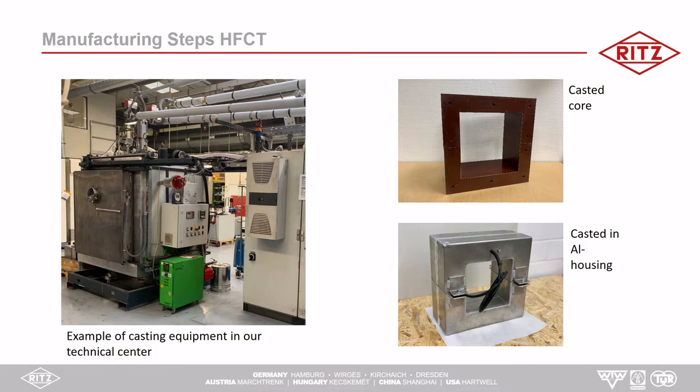The core elements need to be stacked in a split core design. To stabilize and protect them from the environment, mechanical stress, and preserve magnetic properties, the core elements are cast in a strong epoxy resin. Extensive thermocycle tests were done to ensure no cracks occur. For electromagnetic shielding, an aluminum casting or aluminum housing was chosen, where the core with secondary winding is cast inside.